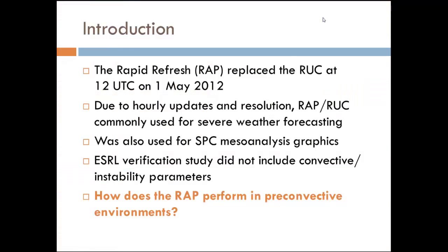So let's jump in. As most of you know, the Rapid Refresh replaced the RUC last year. It took effect on May 1st. And usually due to its hourly updates and resolution, we've been using formerly the RUC and now the RAP for severe weather forecasting, especially since you get those new updates every hour.